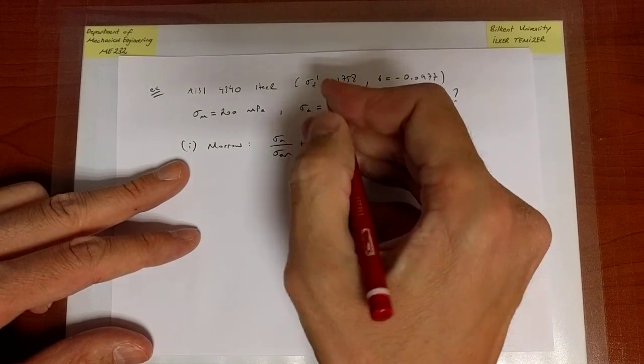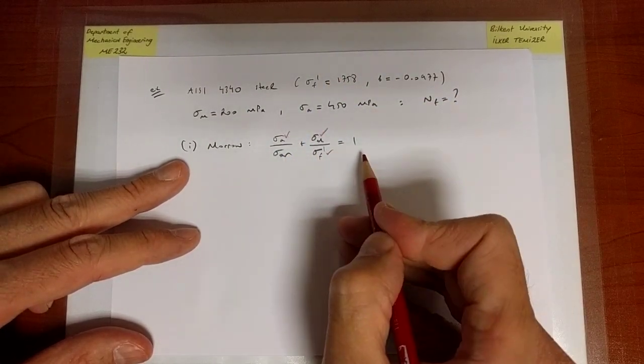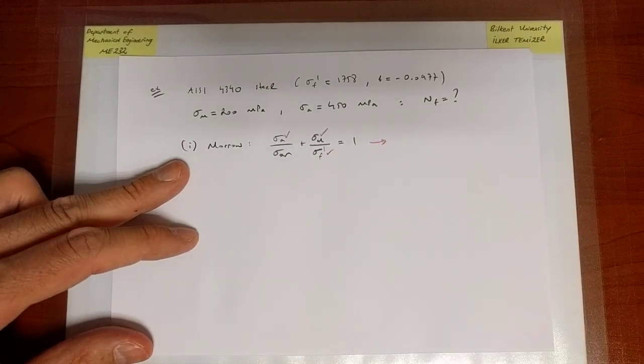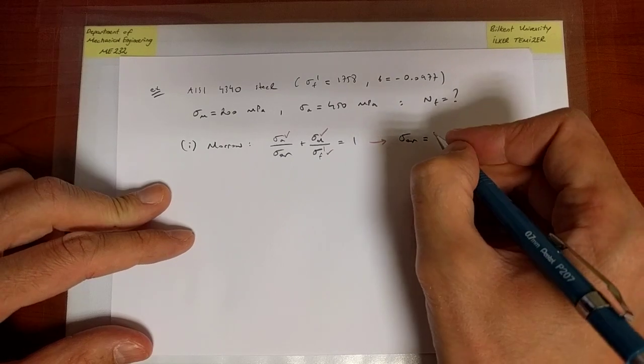In this case, sigma m is already given, sigma f prime is given, sigma a is given, which means I can directly solve for sigma a r. So that is our equivalent completely reverse stress amplitude.